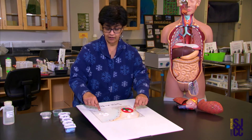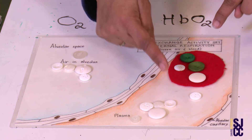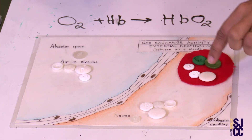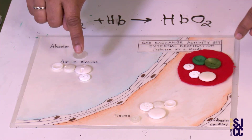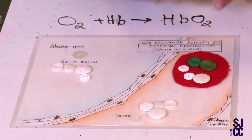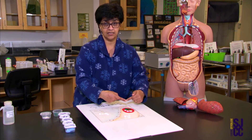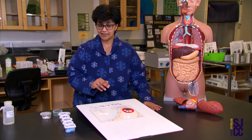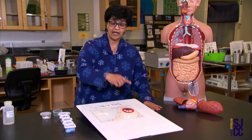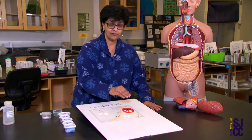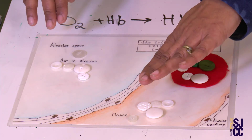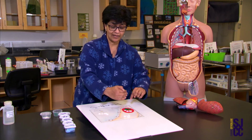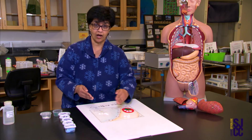As oxygen comes into the red blood cell it keeps binding with hemoglobin to make oxyhemoglobin, and as oxygen levels drop in the plasma, more oxygen is drawn in from the alveolus. We don't really have just one red blood cell — we have a whole bunch. Without the red blood cell, we could only get 8 molecules into the plasma while 8 remained in the air. Hemoglobin allows us to maintain the concentration gradient and take far more oxygen into the blood.